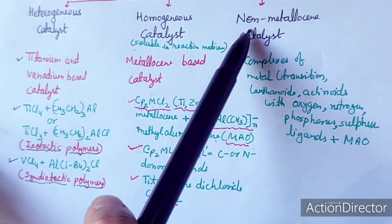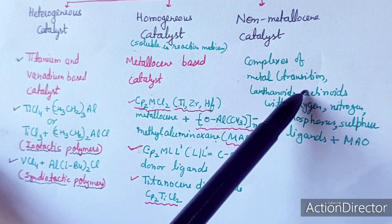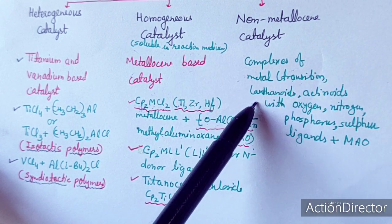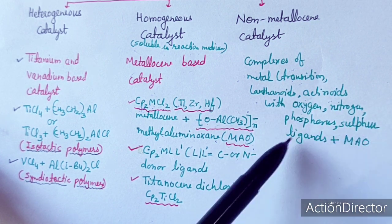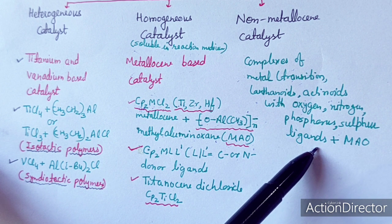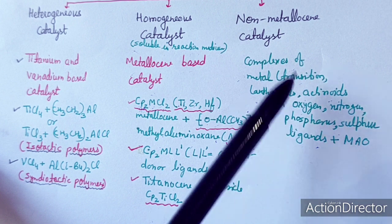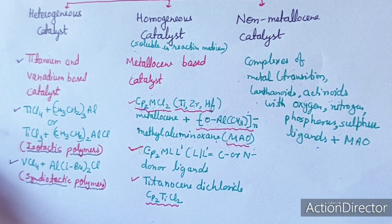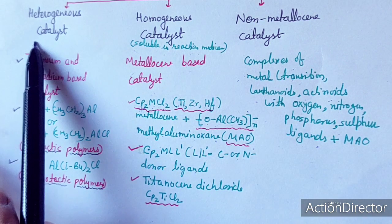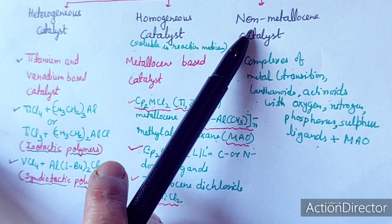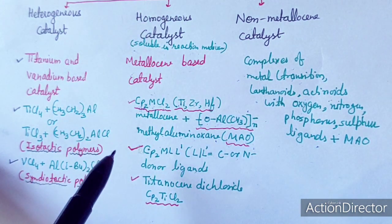The third category is non-metallocene catalyst. These are complexes of metals from scandium through the lanthanoids or actinoids, combined with oxygen, nitrogen, phosphorus, or sulfur-containing donor ligands together with MAO. We have three categories: heterogeneous, homogeneous, and non-metallocene, and our focus is on the homogeneous catalyst.